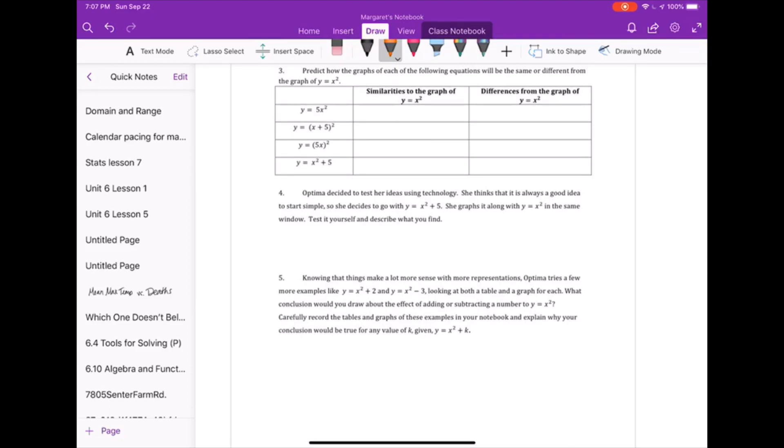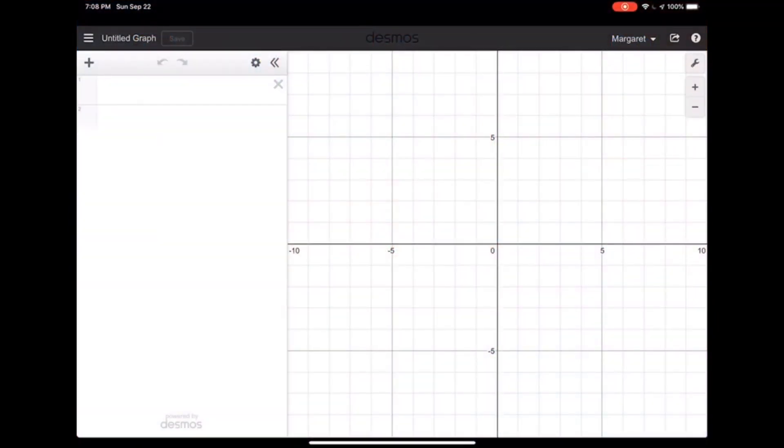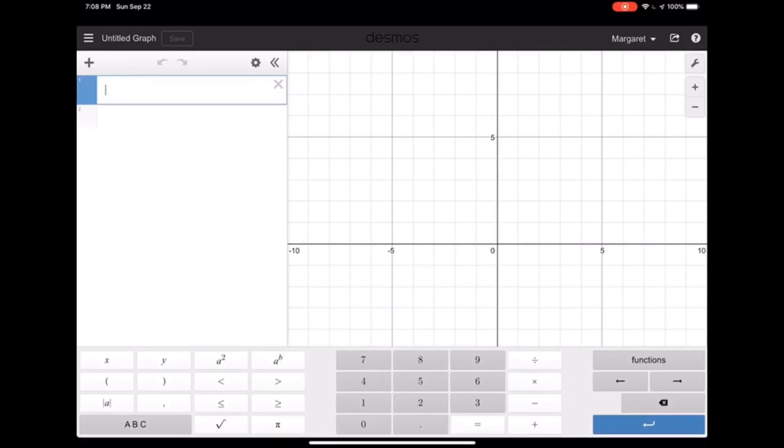So in looking at number 4, we're going to go use technology. I'm going to use Desmos, which is an app and a website. D-E-S-M-O-S, desmos.com. Hopefully, you've used this before, but if not, this is a good time to learn. So I'm going to go and graph our comparisons in Desmos.